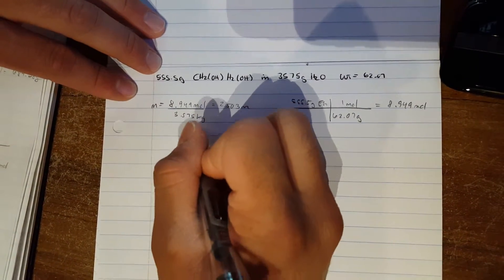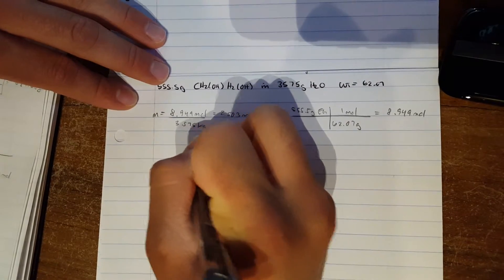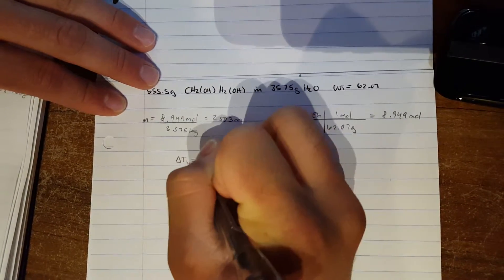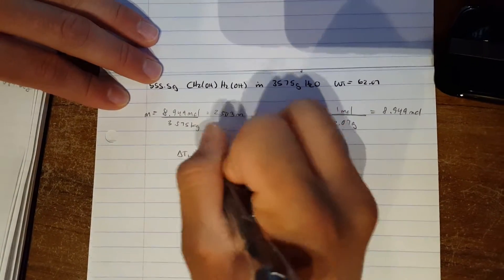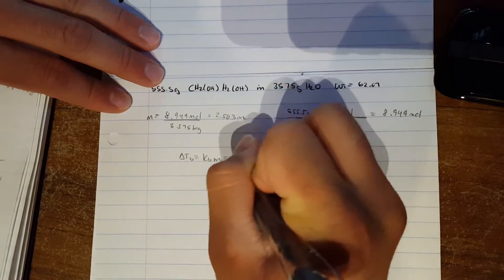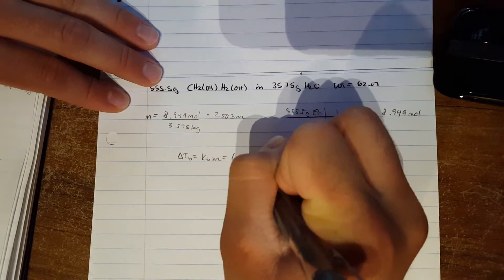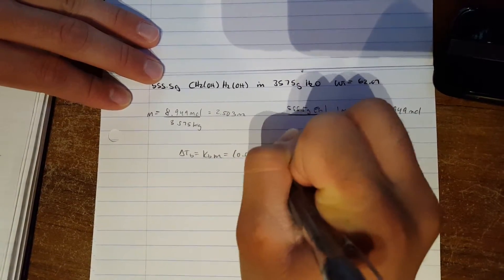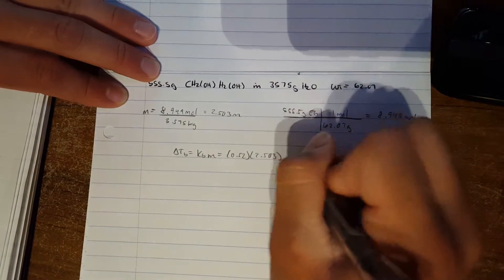And to find boiling point and freezing point, we need the boiling point constant and the molality. So this is the constant and molality which we just found.